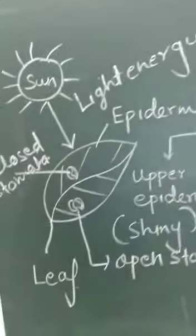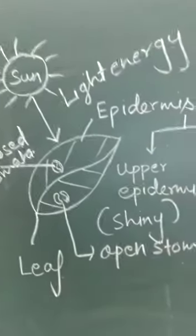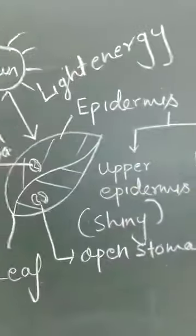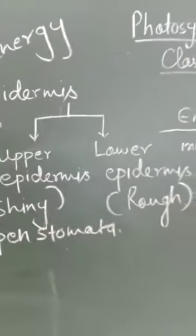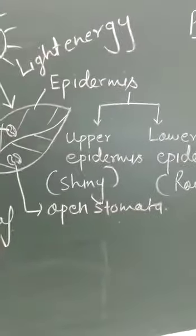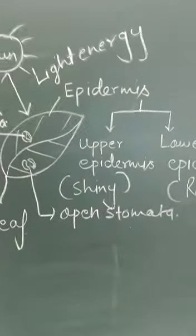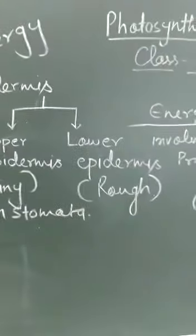There is a sun and there are leaves. Leaves have two surfaces. The upper surface is known as upper epidermis and the lower surface is known as lower epidermis. The upper surface is shiny and the lower surface is rough.